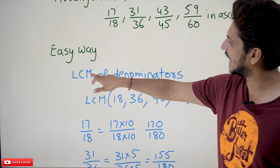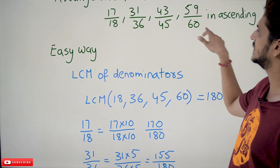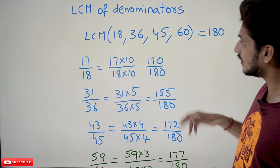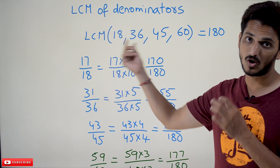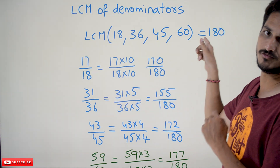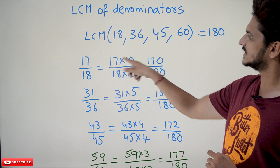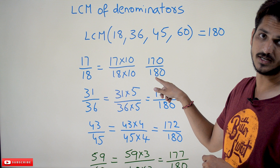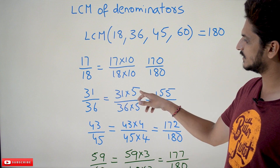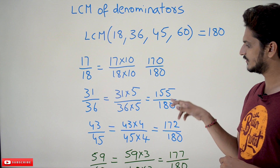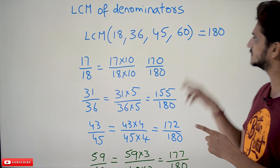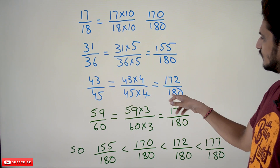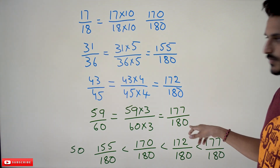The easy way is to find the LCM of the denominators. The LCM of 18, 36, 45, 60 is 180. Now convert each fraction so its denominator is 180. 17/18 becomes 170/180 (multiply by 10). 31/36 becomes 155/180 (multiply by 5). 43/45 becomes 172/180. 59/60 becomes 177/180.